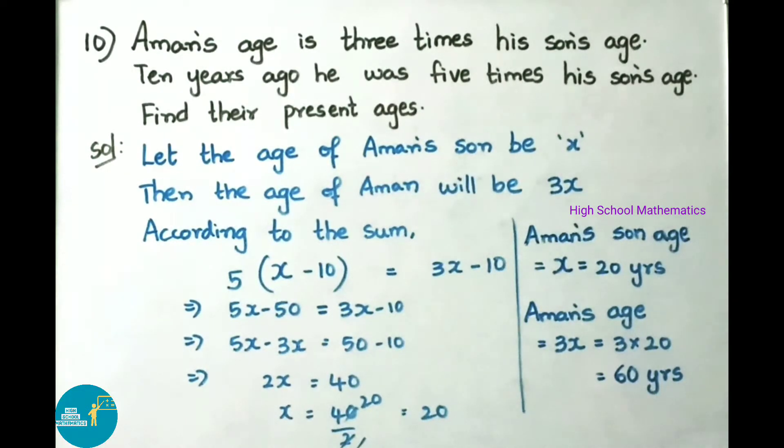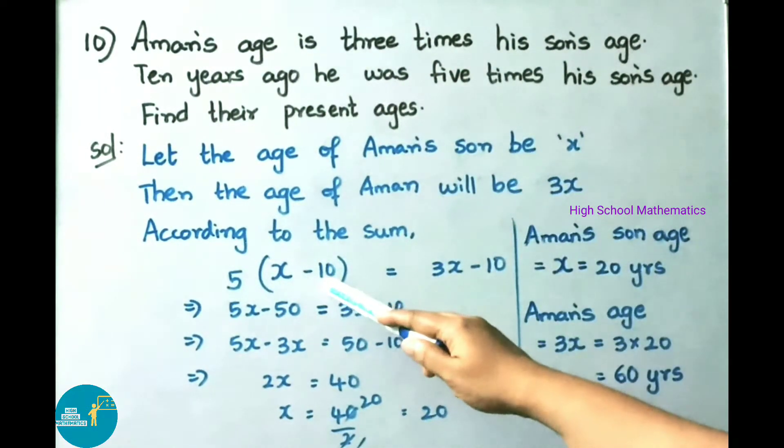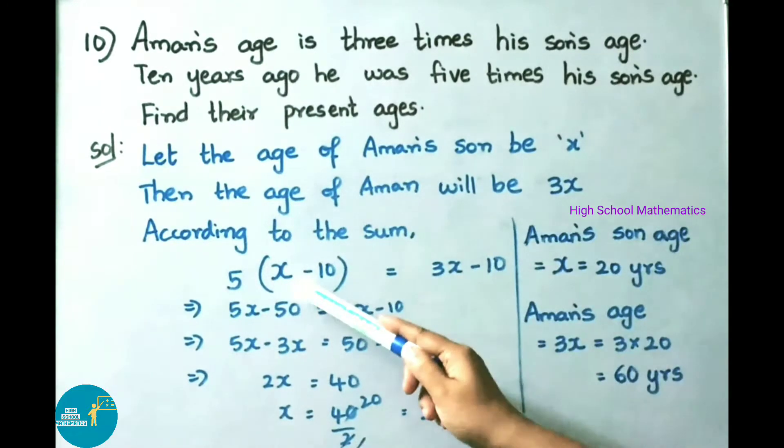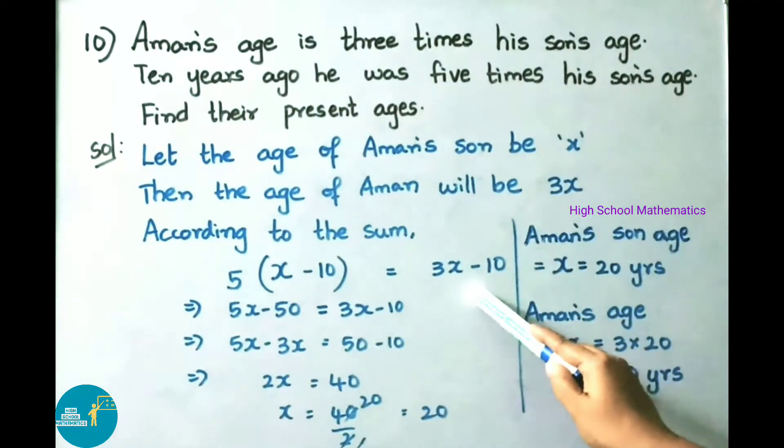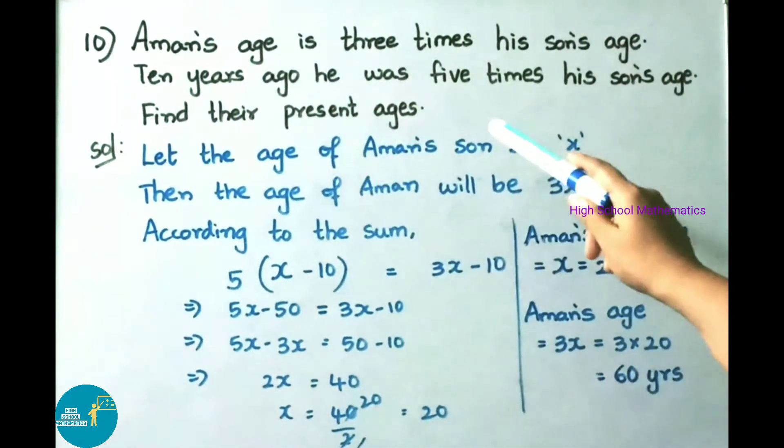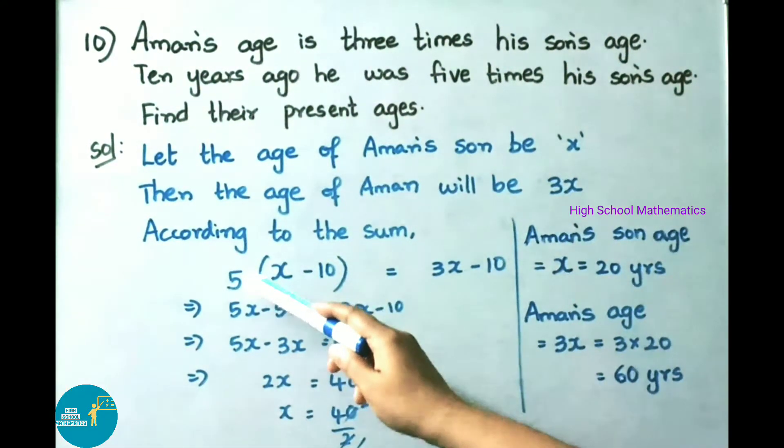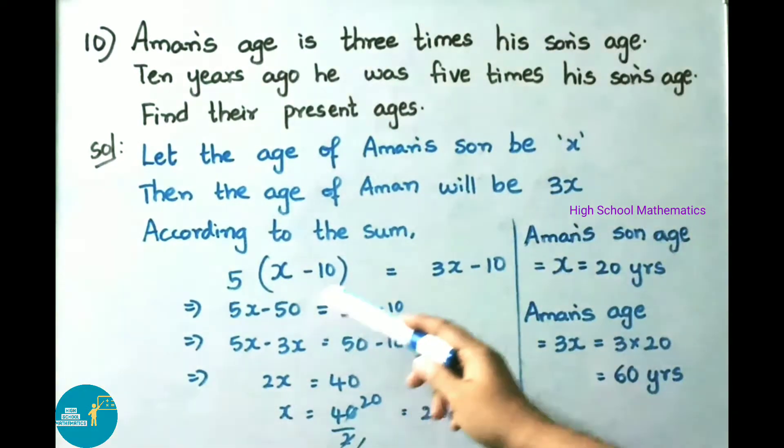they have given 10 years ago. That is, 10 years ago means we have to denote with minus. So we have written minus 10 on both sides. Son's age 10 years ago: x minus 10. Father's age, that is Aman's age, 10 years ago is 3x minus 10. They also given 10 years ago, he was 5 times his son's age. So, 5 into x minus 10 equals 3x minus 10.